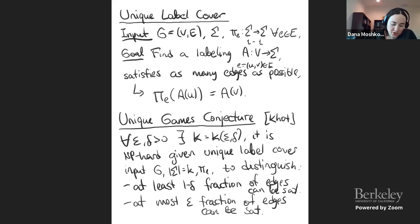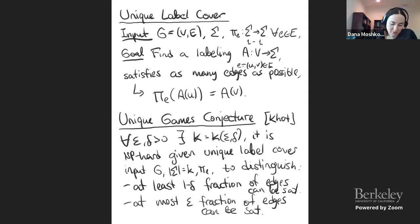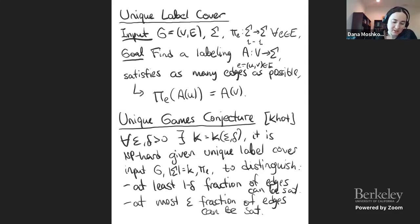The reason Subhash conjectured this is that it is known as a theorem for standard label cover (projection games), where the π_e's are not required to be one-to-one. If they weren't one-to-one, this is true as a theorem, and extremely strong things are known — you can take δ = 0 and ε going to zero. But Subhash was bold enough to hope this is also true for unique label cover where all permutations on the edges are one-to-one functions.